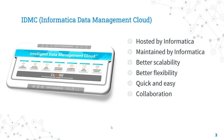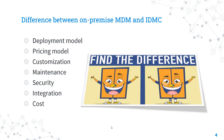Now let's understand the differences between on-premise Informatica MDM and IDMC. The primary difference is their deployment model: on-premise MDM is installed and run on the customer's own servers, while IDMC is a cloud-based solution hosted and managed by Informatica. This means customers have more control over on-premise MDM, while IDMC offers greater scalability and ease of use.